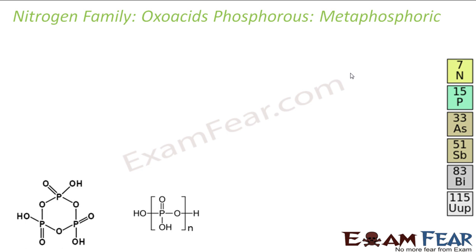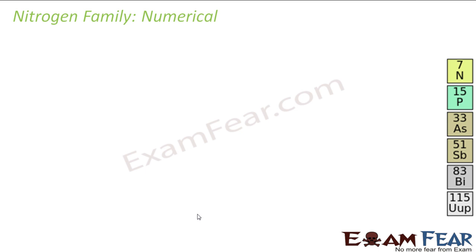Then we have metaphosphoric acid, which is HPO3. There are n number of HPO3 units linked together, with OH and H groups present. That is metaphosphoric acid.